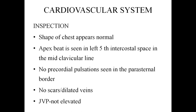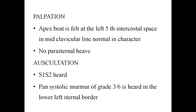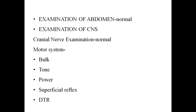Palpation: trachea in midline, chest movement equal bilaterally, no tenderness. Percussion: resonant note on both sides. Auscultation: normal vesicular breath sounds heard on both sides, no added sounds. Cardiovascular system inspection: shape of chest normal, apex beat seen in left 5th intercostal space in the midclavicular line, no precordial pulsations in parasternal border, no scars or dilated veins, JVP not elevated. Palpation: apex beat felt at left 5th ICS midclavicular line, normal character, no parasternal heave. Auscultation: S1, S2 heard, pan-systolic murmur grade 3/6 at lower left sternal border.